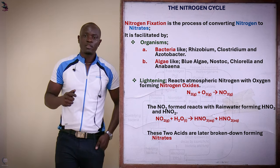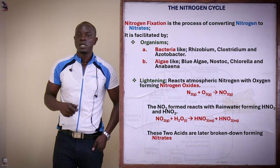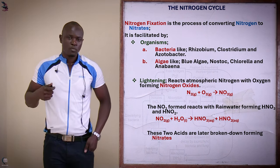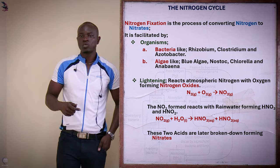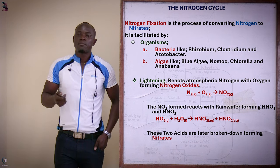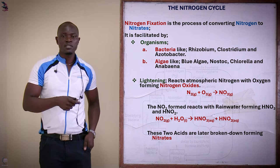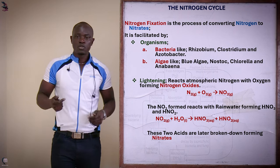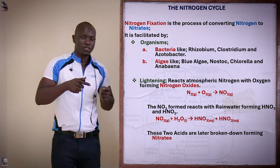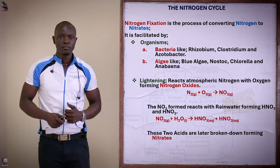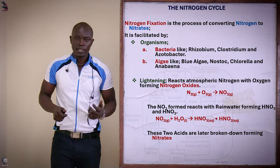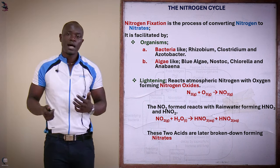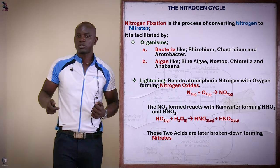Nitrogen fixation can be done through two main agents. The first agent is organisms found in the environment. The bacteria which facilitate nitrogen fixation include the rhizobium bacteria, found in the root nodules of leguminous plants. We also have azotobacter and clostridium bacteria. Apart from bacteria, we have algae, including blue algae, anabaena, chlorella, and nostoc, which all facilitate the process of nitrogen fixation.